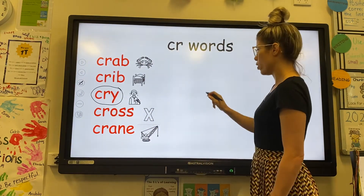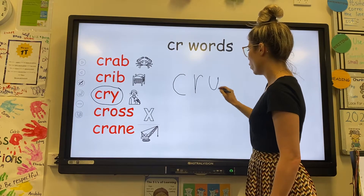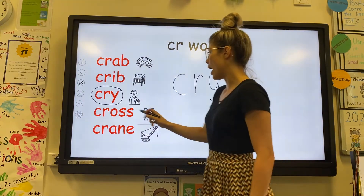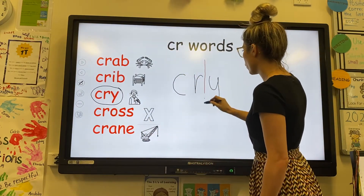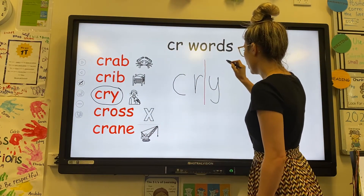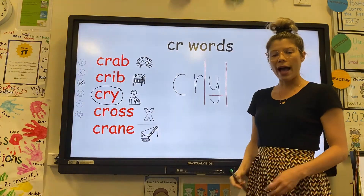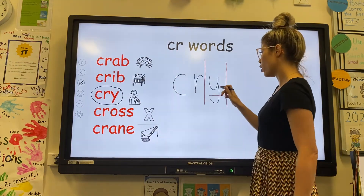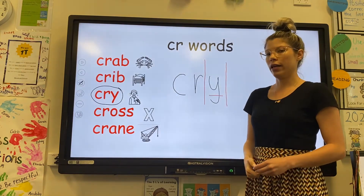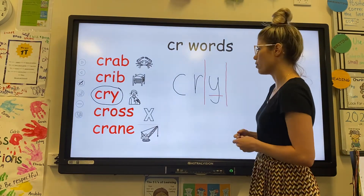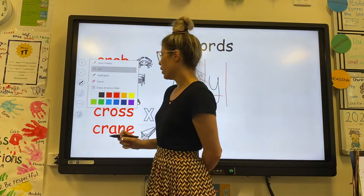Our next word is cry. The letters in the word cry are C, R, Y. And the sounds that we can hear in cry are CR, I — but the Y is making an I sound. We don't hear the Y; it's more of an I sound. So look out for that Y — it can be a bit of a tricky letter.